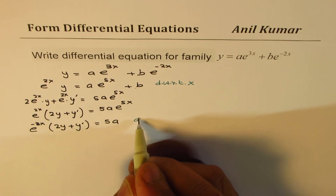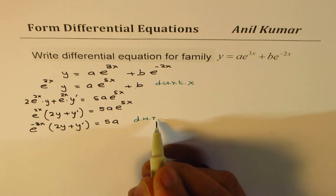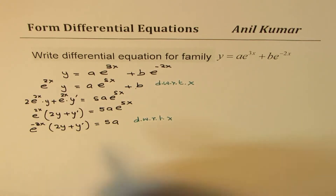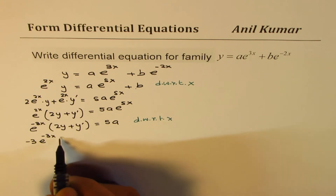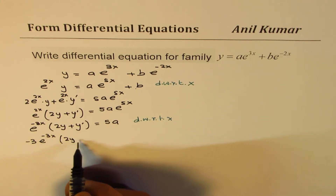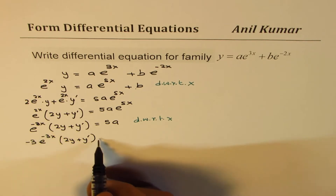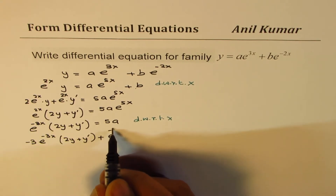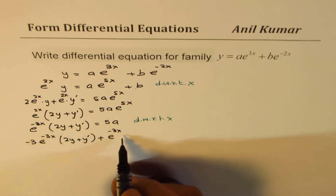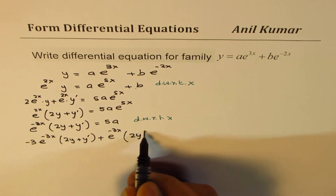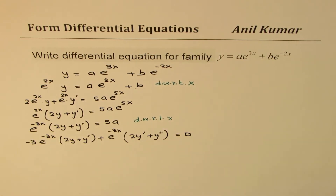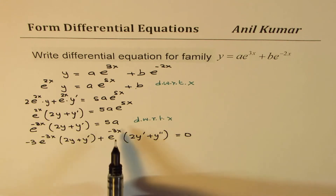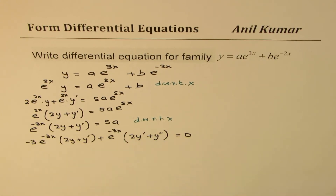Differentiating with respect to x and applying the product rule: -3e^(-3x)(2y + y') + e^(-3x)(2y' + y'') = 0. So we have eliminated the second arbitrary constant with the second derivative. The key is to isolate the constant and then take the derivative.